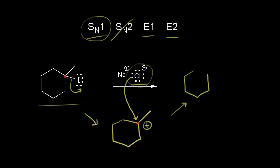We draw in our ring with a methyl group and a bond to chlorine, showing the lone pair of electrons in magenta forming this bond between chlorine and the carbon in red. We don't have any stereochemistry to worry about here because there are no chiral centers. So this was an SN1 mechanism.